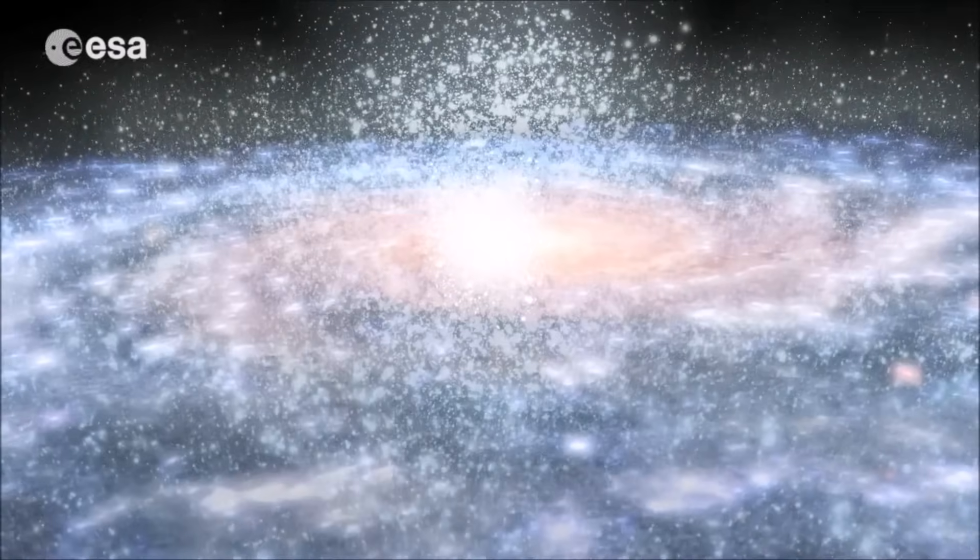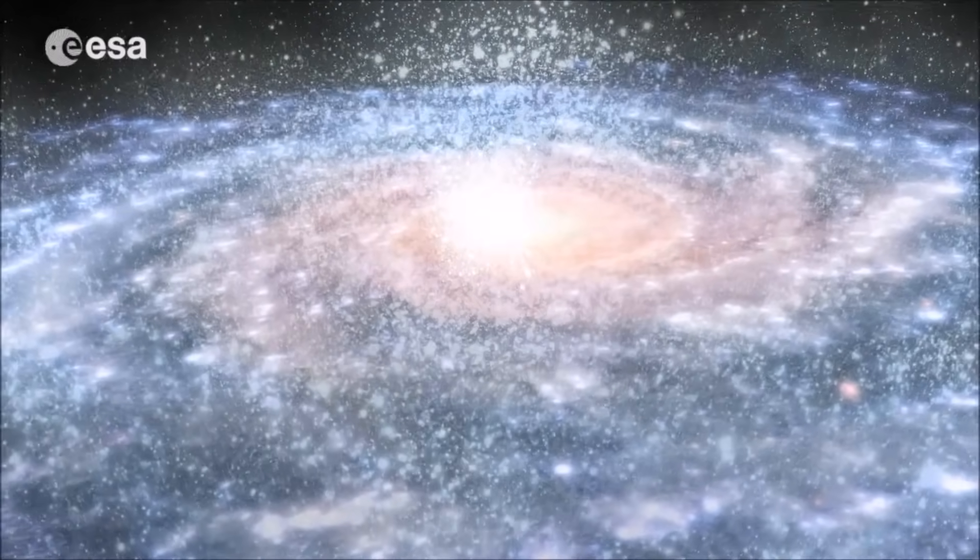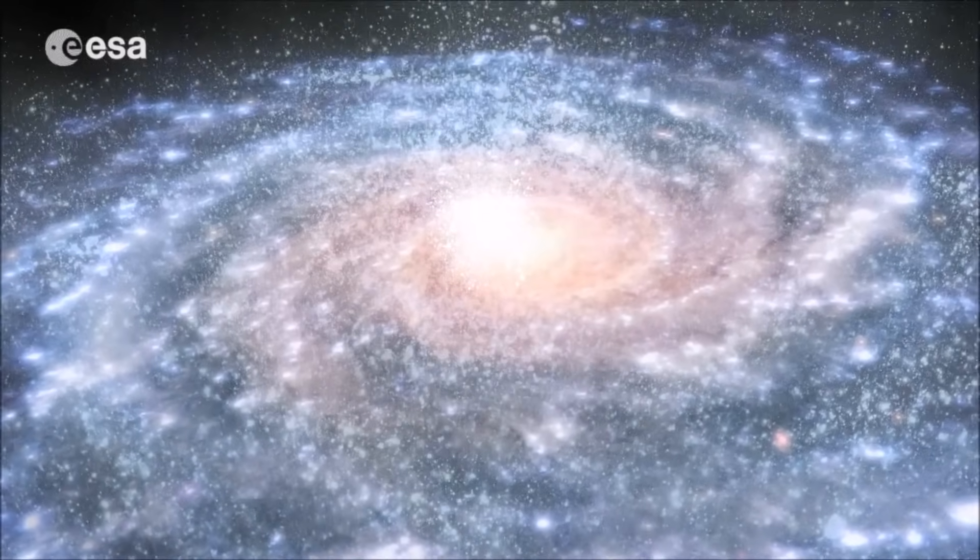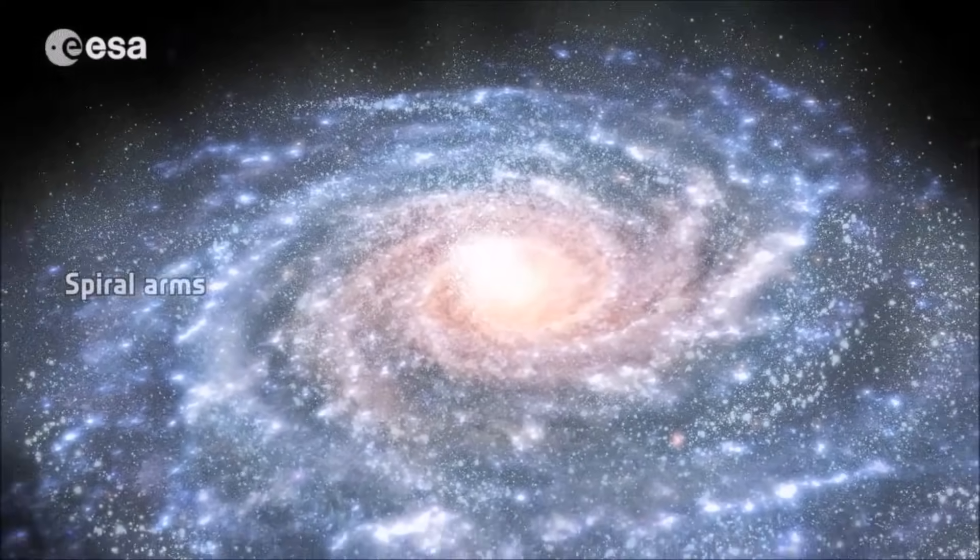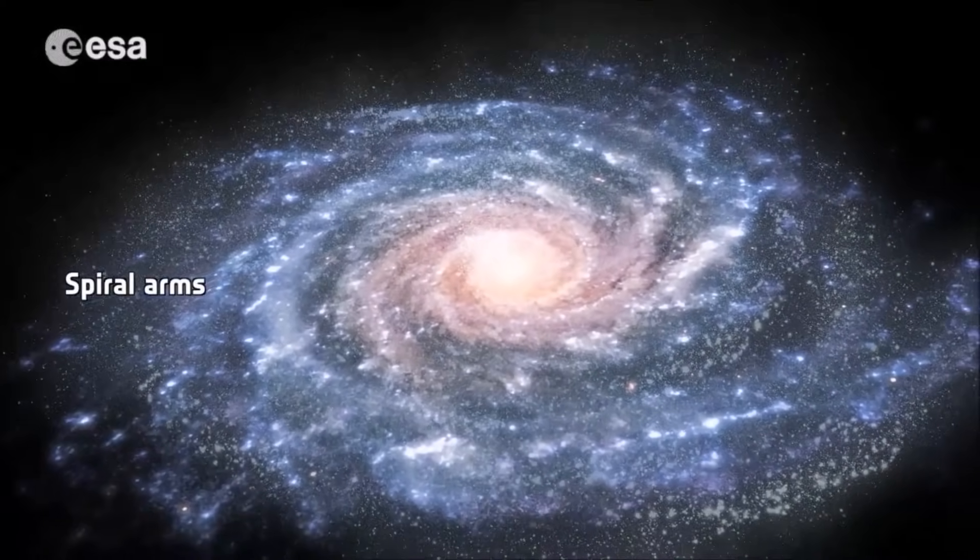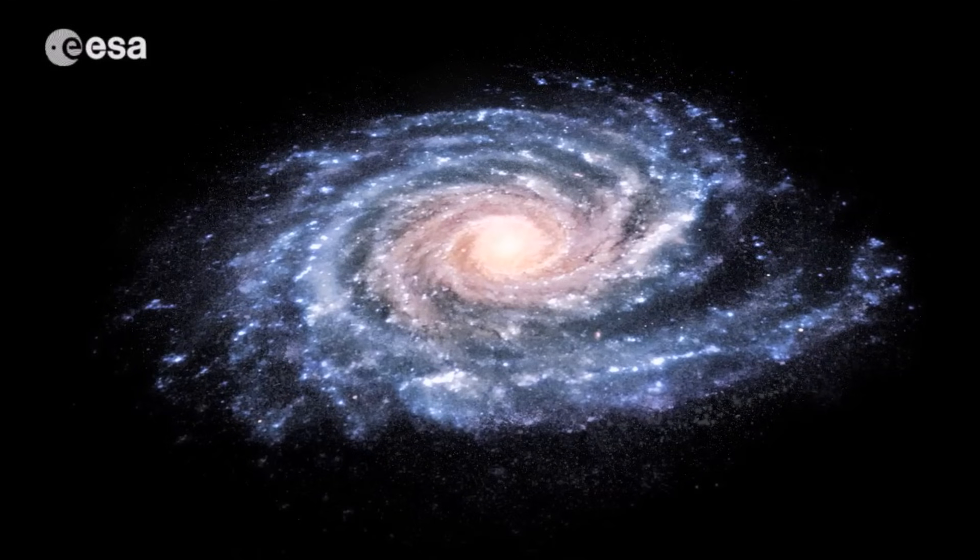The spiral arms are part of the disk and make the galaxy look a little like a pinwheel. Our solar system is located in one of the Milky Way's spiral arms, where star systems are spread much farther apart than in the crowded galactic center.